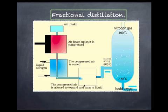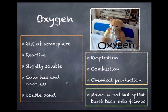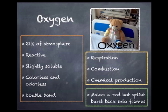Moving on to oxygen. Oxygen is the second most abundant gas in our atmosphere, at about 21%. It's a very reactive gas — even though it has a double bond, it's much more reactive than nitrogen and likes to play a part in a lot of things. It's very slightly soluble; if it were insoluble, fish would be dying left, right and centre because they use dissolved oxygen in water. It's colourless and odourless, and it's got a double bond between the two oxygen atoms. So: reactive, slightly soluble, odourless, colourless, double bond.